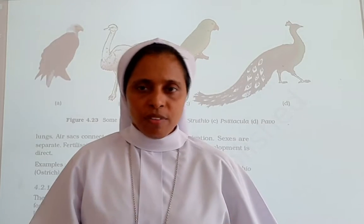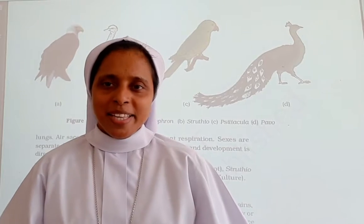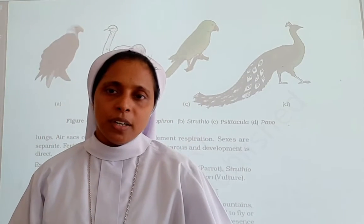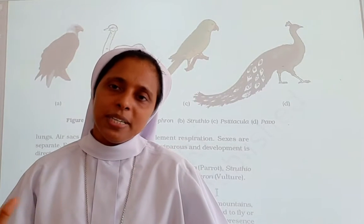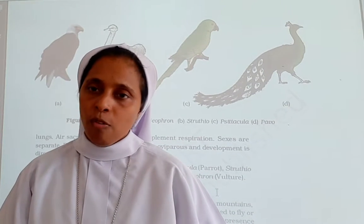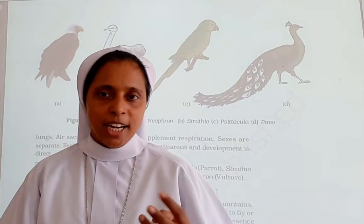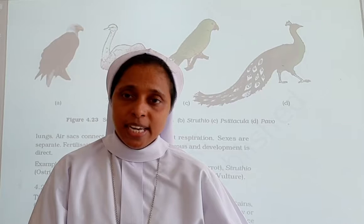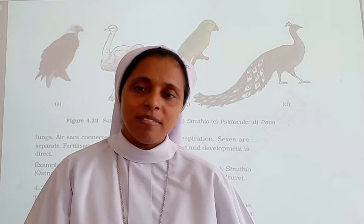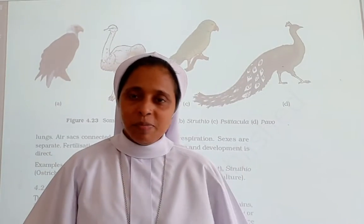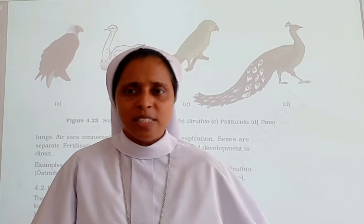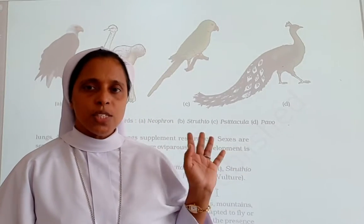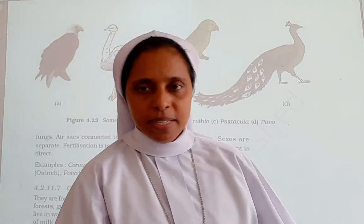To summarize Aves: presence of feathers, four-chambered heart, respiration through lungs, internal fertilization, oviparous with direct development, crop and gizzard in digestive tract, and forelimbs modified into wings while hind limbs are used for walking, clasping, and swimming. Examples: Corvus (crow), Columba (pigeon), Struthio (ostrich), Psittacula (parrot), and Pavo (peacock).